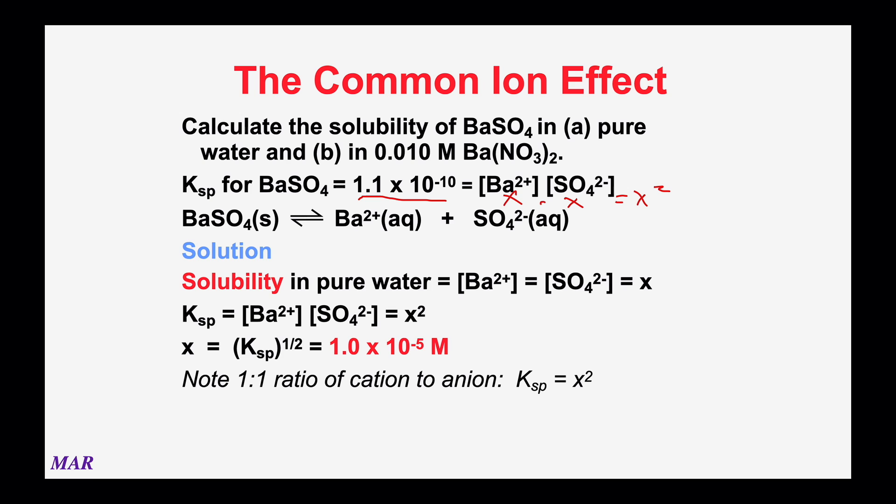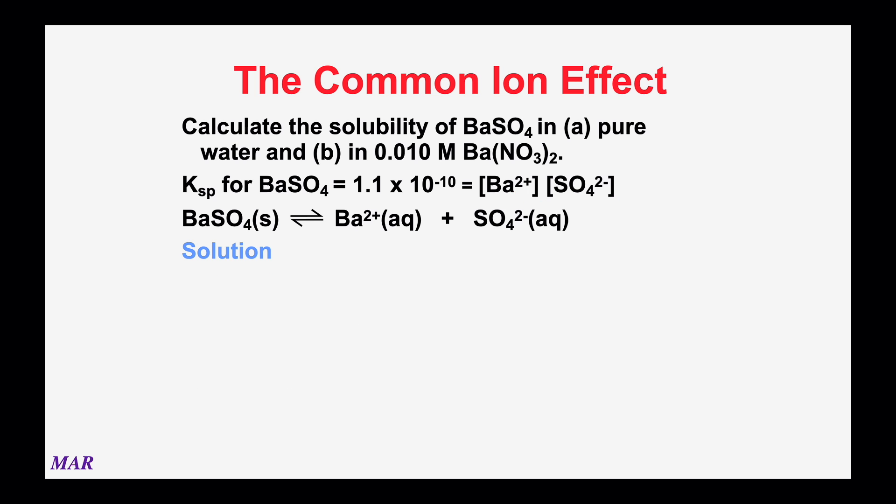This is a one-to-one ratio of cation to anion, one barium, one sulfate. So X times X, X² equals Ksp. We'll see a lot of X² equals Ksp for one-to-ones. We'll also see some 4X³ equals Ksp expressions when you have two anions and one cation or two cations, one anion.